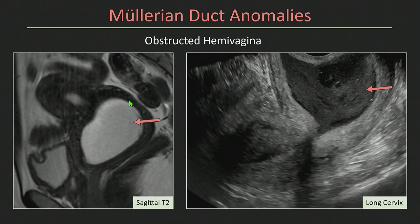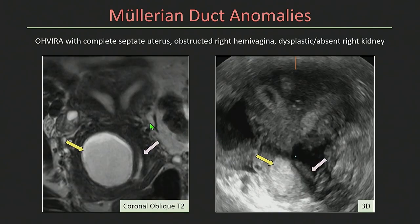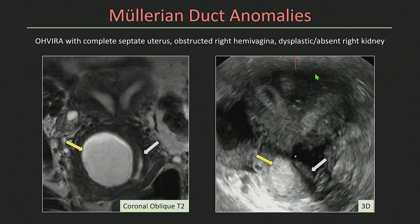Here's the correlative MR imaging. On sagittal T2-weighted image, you can see the big fluid collection in the area of the vagina corresponding to the clot in the obstructed hemivagina. On coronal oblique T2, when protocoled appropriately for Mullerian duct anomaly protocol, we try to get axial or coronal oblique images to see the top of the uterus. You can see the top of the uterus is smooth, there's indentation of the endometrial cavity, a fibrous septum, the obstructed hemivagina on the right, and the normal vagina on the left. The reason I show a lot of MR throughout this talk is because the 3Ds are really hard on ultrasound.